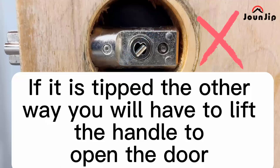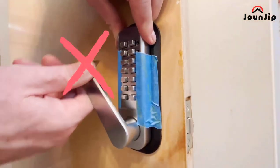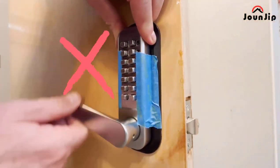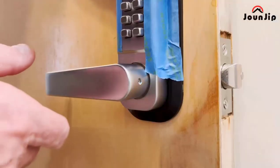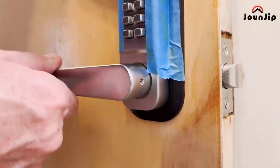If it's tipped the other way, you will have to lift the handle to open the door, like so. To correct this, take the spindle back out and turn at the opposite angle.